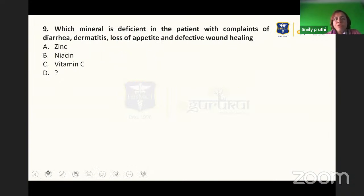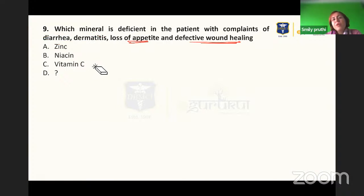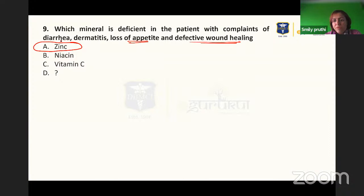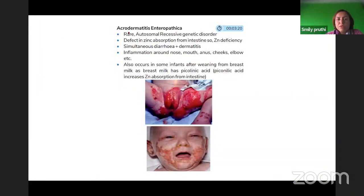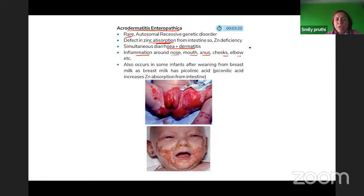Next: which mineral is deficient in a patient with diarrhea, dermatitis, loss of appetite, and defective wound healing? Although diarrhea and dermatitis may suggest niacin, the presence of loss of appetite and defective wound healing points to zinc. This is acrodermatitis enteropathica — a rare autosomal recessive disorder where zinc is not absorbed from the intestine. Diarrhea and dermatitis develop simultaneously, with inflammation around the nose, mouth, anus, cheeks, and elbows.